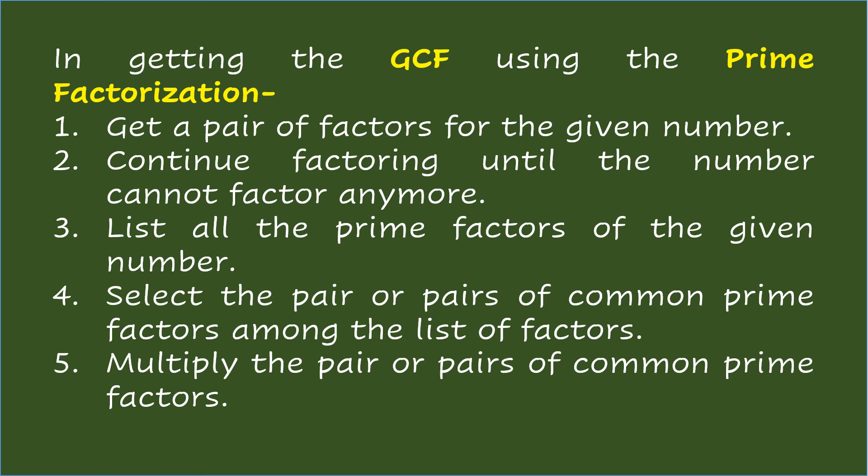In getting the GCF using prime factorization: get a pair of factors for the given number, continue factoring until the number cannot be factored anymore, list all the prime factors, select the pair or pairs of common prime factors among the list, then multiply the common prime factors.